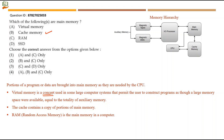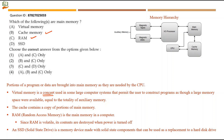RAM is the direct main memory in a computer — 4GB, 8GB, 16GB RAM all refer to main memory. RAM is volatile; its contents are destroyed when power is turned off. SSD (solid state drive) is a secondary storage device used as a replacement for hard disk drives, so it is not main memory. Virtual memory is a concept, not physical main memory. Only cache memory and RAM are main memory — option 2, B and C, is the right answer.